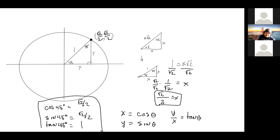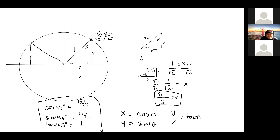We're going to go to the other quadrant — over here. The reference angle is still 45 degrees, but the coordinates change. We don't need to go through the process again because the triangle on the right actually tells us what this answer is, but with one slight change.